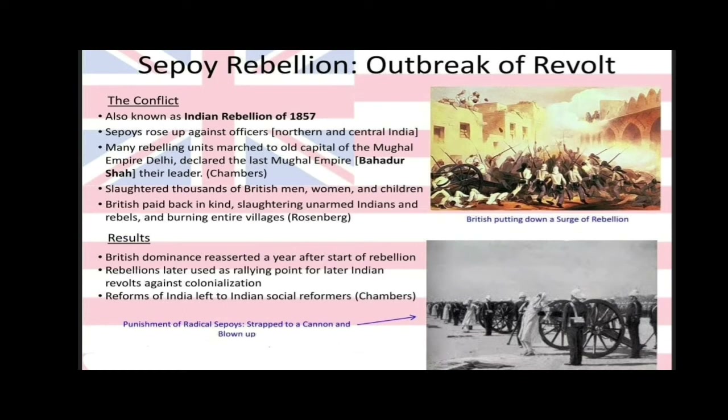Outbreak of Revolt — also known as the Sepoy Rebellion or Indian Rebellion of 1857: Sepoys rose up against officers. Many rebelling units marched to the old capital of the Mughal Empire, Delhi, and declared the last Mughal Emperor their leader. Thousands of British men, women, and children were slaughtered. The British paid back in kind, slaughtering unarmed Indians and rebels and burning entire villages.